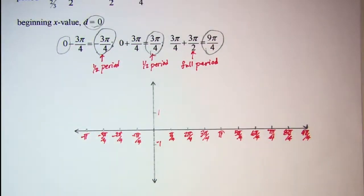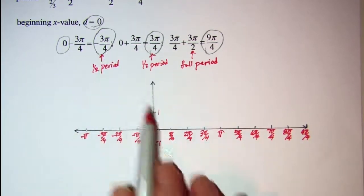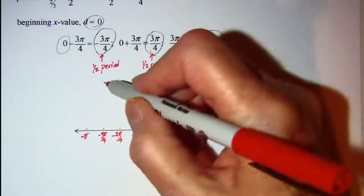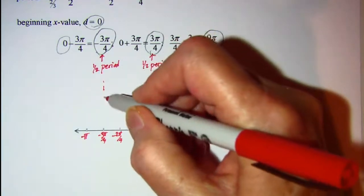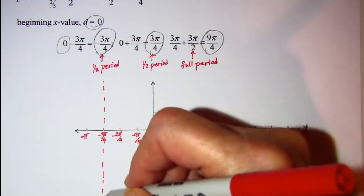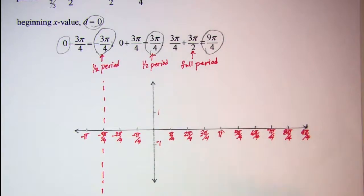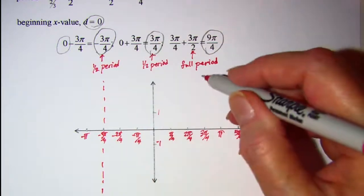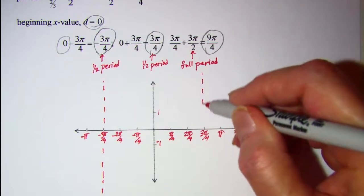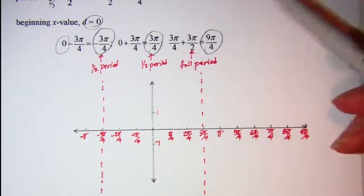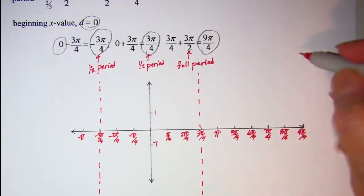Our asymptote to the left of our y-axis is going to be at negative 3π over 4, and then we have an asymptote at 3π over 4, and we have another one at 9π over 4.